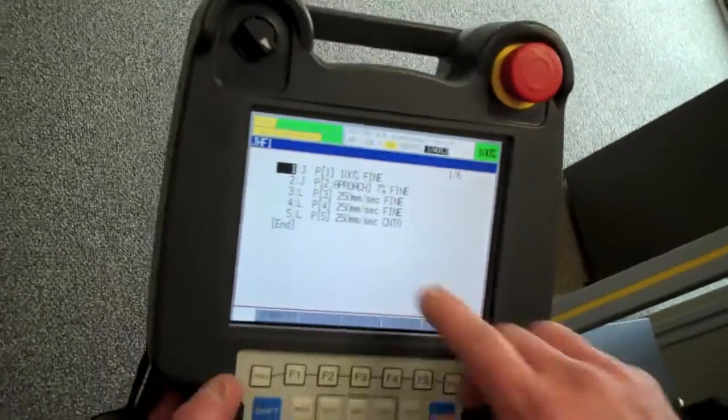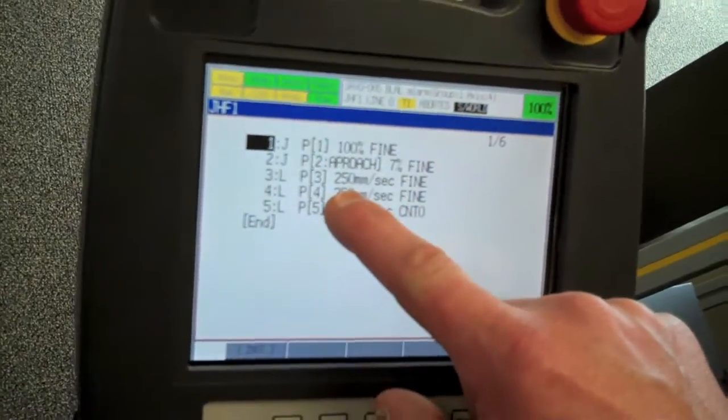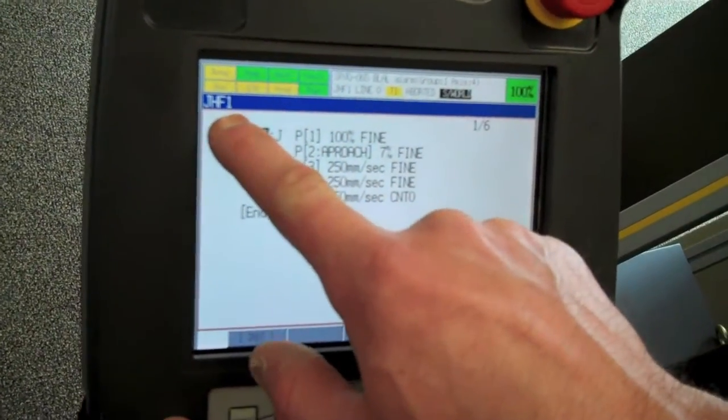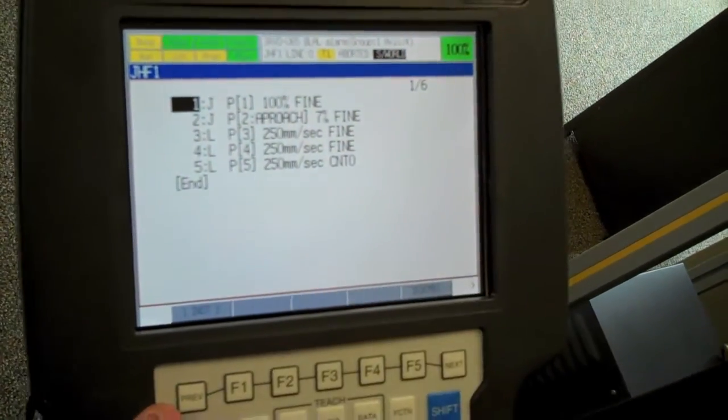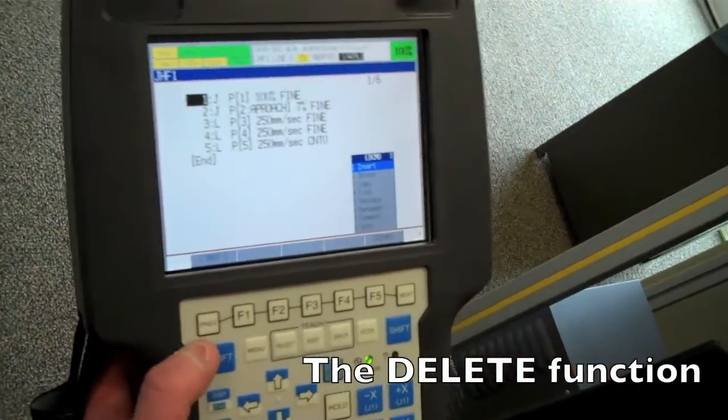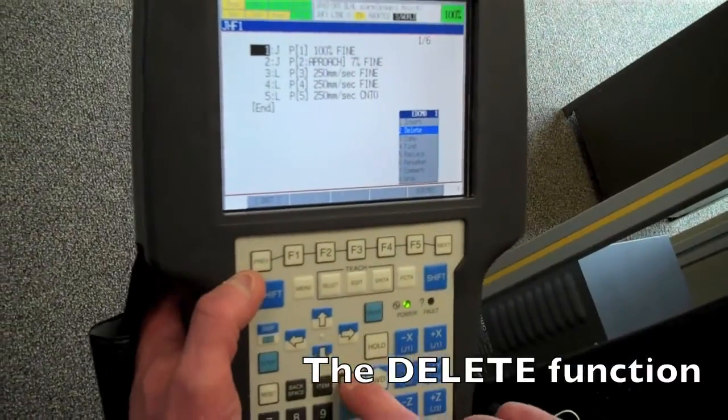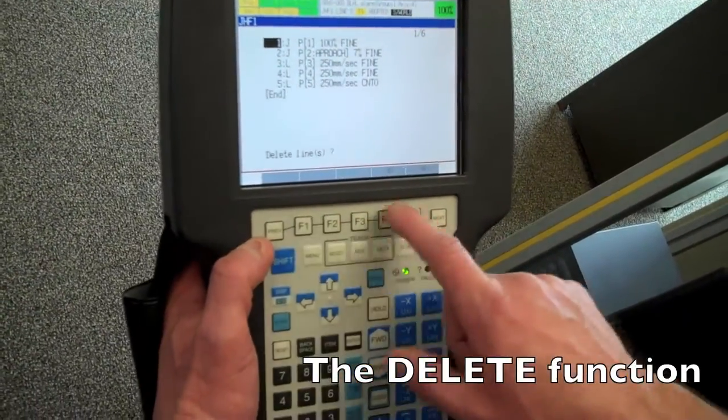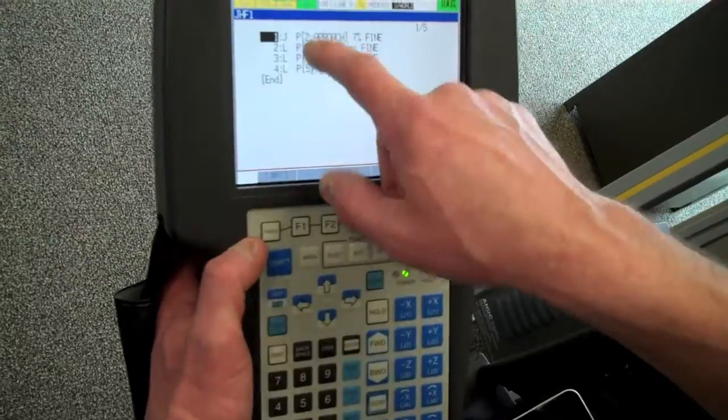Here you can see an example of the home position at the beginning of the number one in our three-part program. So what we're going to do to delete that is we're going to go up to edit command, go down to delete, delete the line, yes. Now we've deleted that home position.